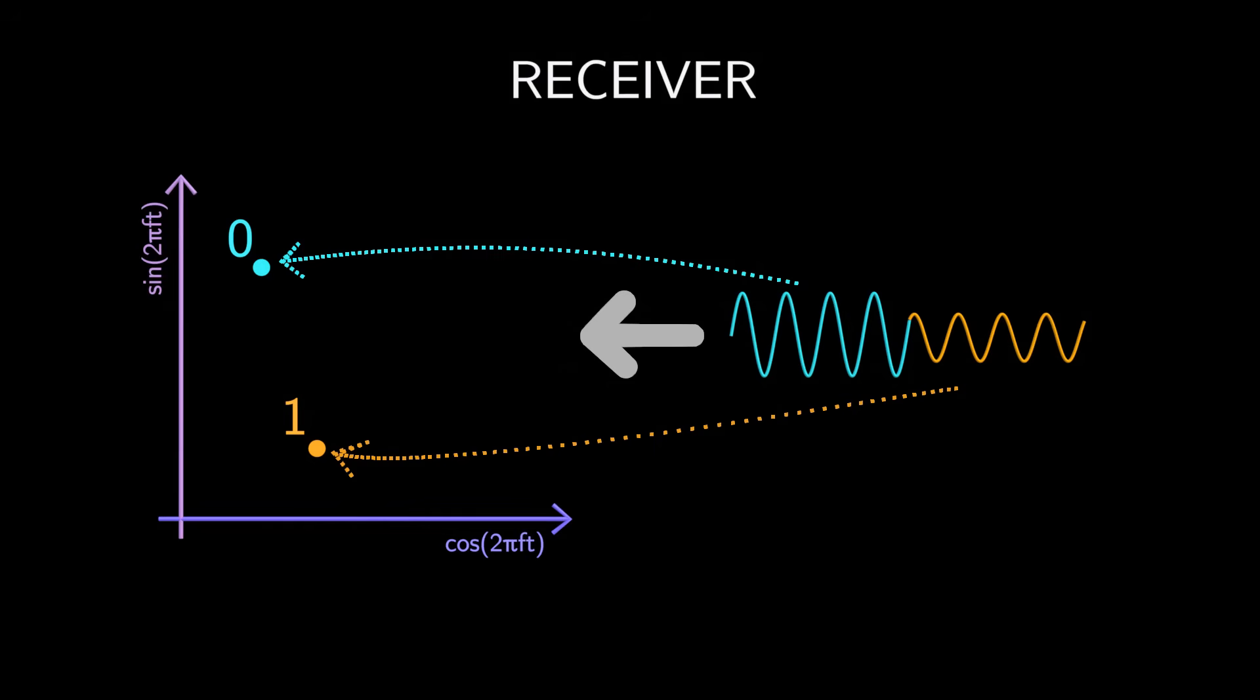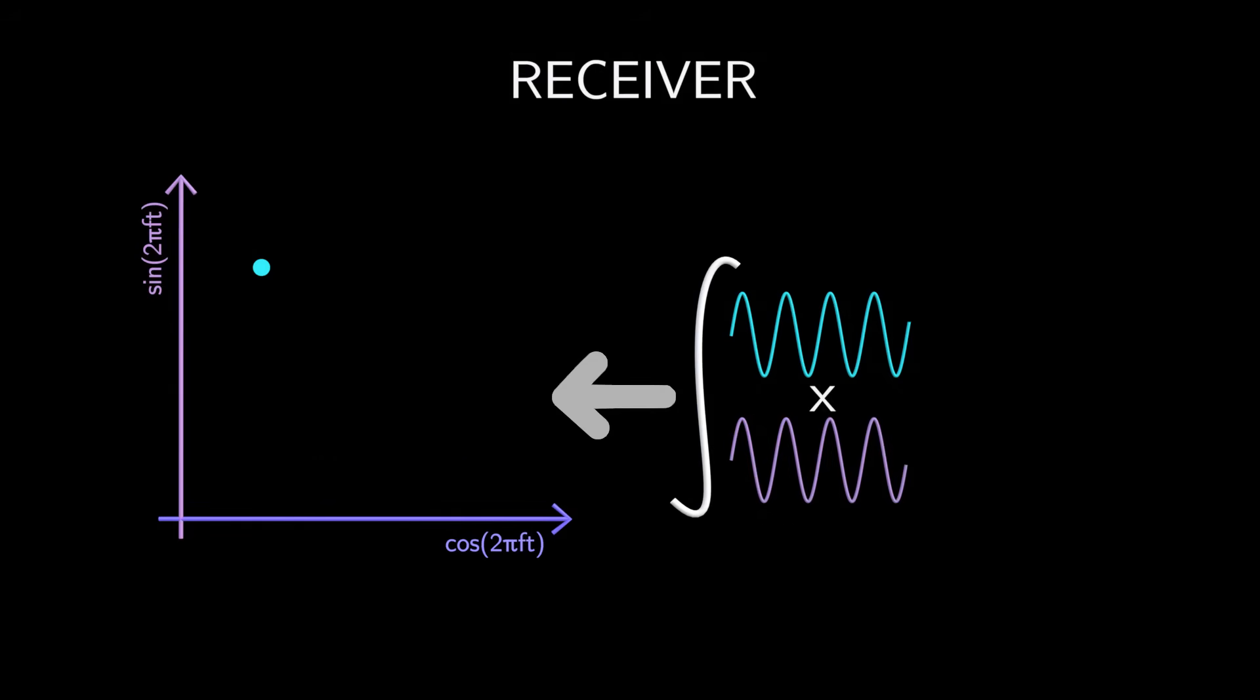So the receiver correlates the received signal with sine wave and cosine wave. In other words, the receiver multiplies the received signal with a sine wave and integrates the result to get the vertical component of the constellation point. Similarly, it multiplies by a cosine wave and integrates to get the horizontal part.